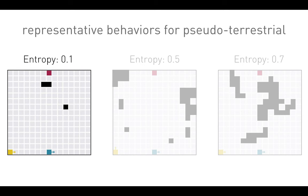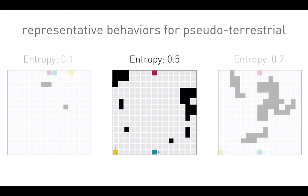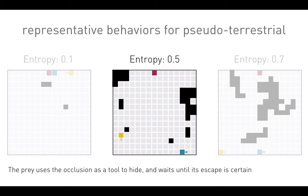At entropy 0.1, we see behaviors very similar to the aquatic regime: wall-following behaviors. At entropy level 0.5, something very different starts to happen. Notice this area — the prey escapes behind there and does something like a broken-wing display, where it tries to lure the predator into a cul-de-sac and then escape. The prey uses the occlusion as a tool to hide and waits until its escape is certain.